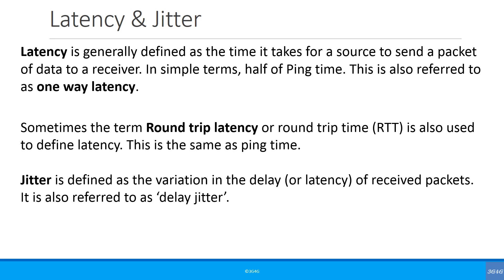For example, if the latency is 50 ms and jitter is 10 ms, that means packets can arrive anytime between 50 ms and 60 ms. Jitter is generally caused by congestion in the network. A way to reduce jitter is to use a de-jitter buffer in the receiver.